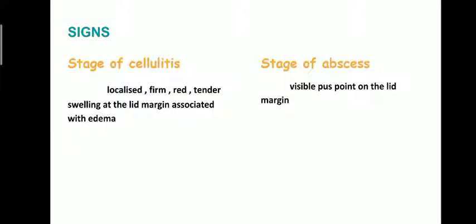Signs: there are two stages of hordiolum externum. The first stage is the stage of cellulitis, followed by the second stage of abscess formation. In the stage of cellulitis, there is localized firm red tender swelling at the lid margin, associated with edema. In the stage of abscess formation, there is a visible pus point on the lid margin.